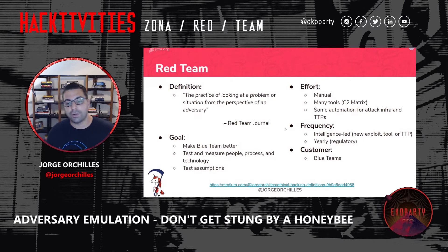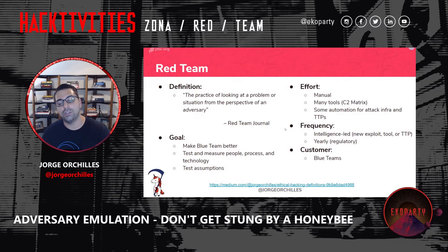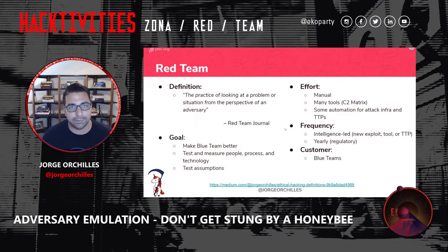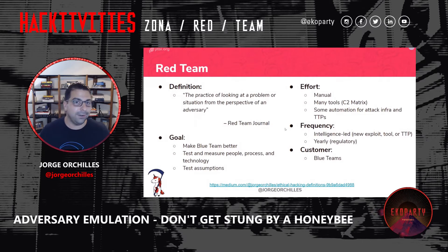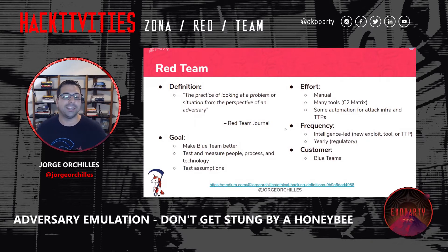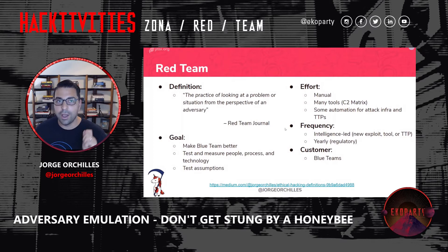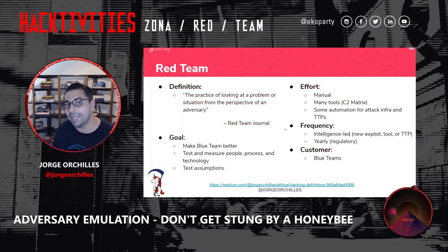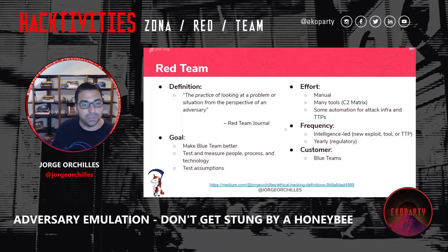The frequency of red team engagements is really intelligence-led. Whenever the red team gets new intelligence — a new exploit, a new tool, a new TTP — maybe at this conference we hear of a new technique someone has employed — we want to test it against ourselves. There are some regulations that require you to test on a yearly basis. And the customer is the blue teams, which is very different from the customer of a vulnerability assessment or pen test, which are the operations teams and developers.